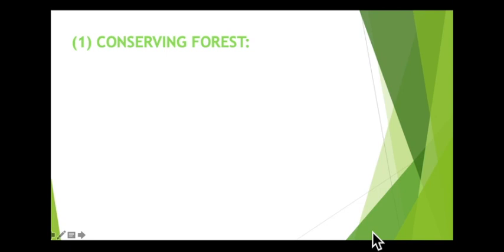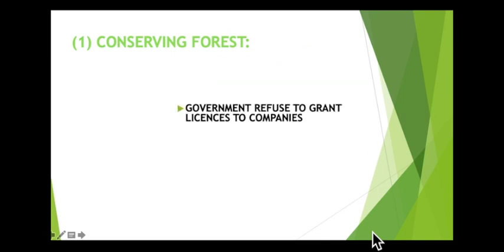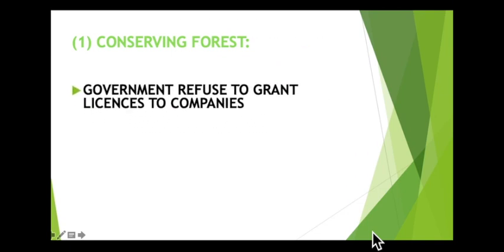We have already seen how deforestation in many parts of the world has caused several problems, but it is possible to use forests sustainably. First, governments can refuse to grant licenses to companies that cut down valuable forests. This can be difficult, however, because governments can make large amounts of money from selling the rights to harvest timber. But if governments continue to exploit forests for money, we are unable to save them.